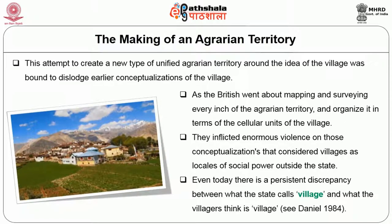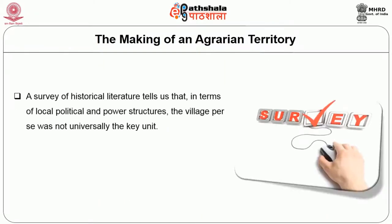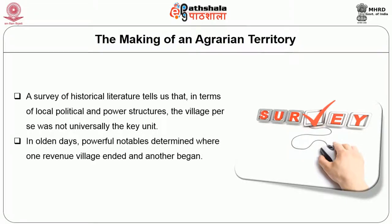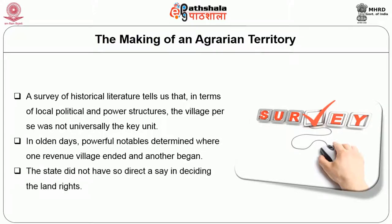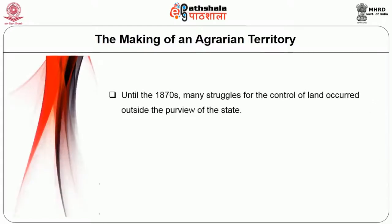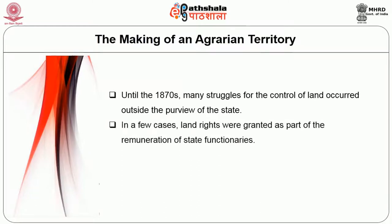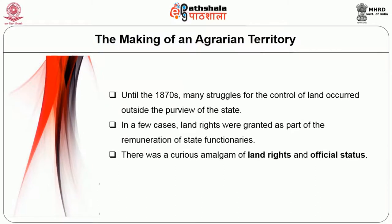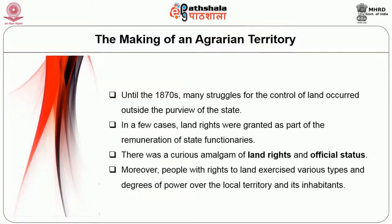Even today there is a persistent discrepancy between what the state calls village and what the villagers think the village is. A survey of historical literature tells us that in terms of local political power structures, the village per se was not universally the key unit. In old days, powerful notables determined where one revenue village ended and another began. The state did not have a direct say in deciding land rights. Until the 1870s, many struggles for the control of land occurred outside the purview of the state, and land rights were often granted as part of remuneration of state functionaries.